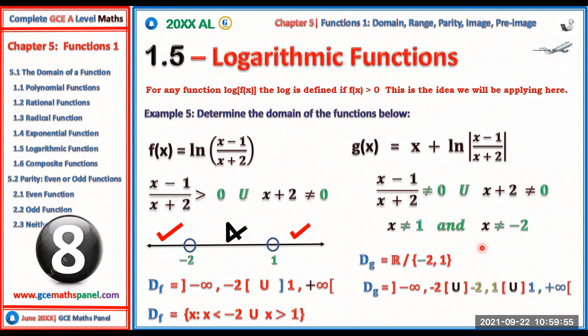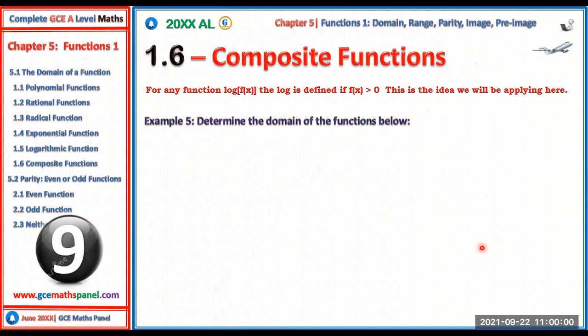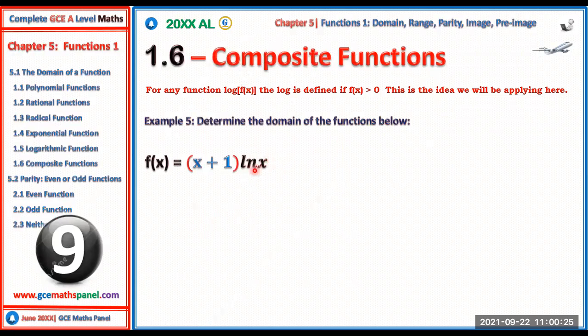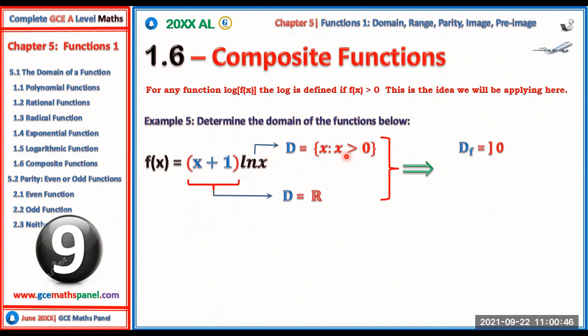For composite functions, consider (x + 1)·ln(x). For x + 1, the domain is all real numbers. For ln(x), we need x > 0 strictly. The combined domain takes the intersection: x must be strictly greater than 0. So the domain is (0, +∞).